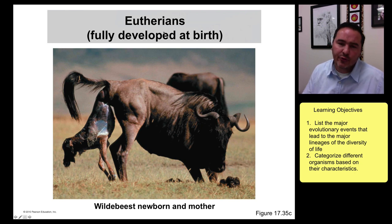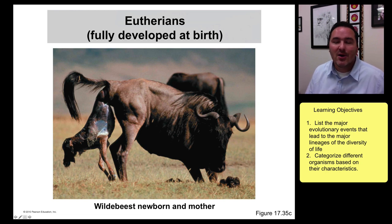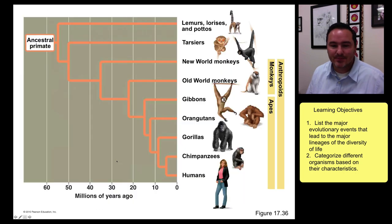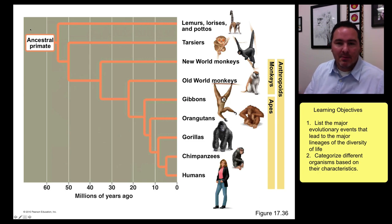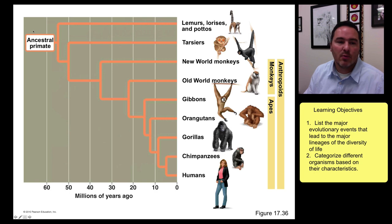Then you have the true placental mammals, which are fully developed at birth. Once birthed, they need to quickly stand up and function on their own — in most organisms. Humans are the one kind of weird example where we must take care of our children for many years. Mammals have a huge diversification, and the lineage that interests us most is the primate lineage, because we belong to it.